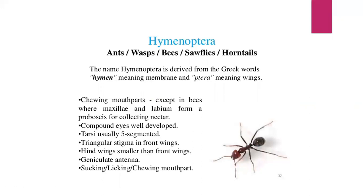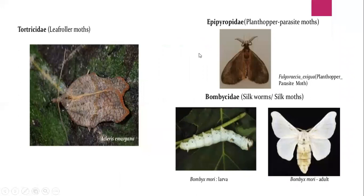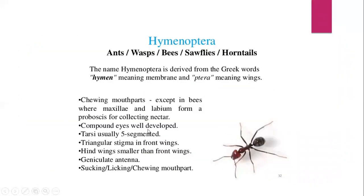Hymenoptera — Hymenopterans include ants, wasps, bees, and sawflies. The name Hymenoptera is derived from the Greek word 'hymen' meaning membrane and 'tera' meaning wings — membranous wings. These consist of chewing mouthparts in most insects. In bees, maxillae and labium form the proboscis for collecting nectar — lapping and siphoning type. Most Hymenopterans consist of chewing mouthparts. The eyes are compound and very well developed. The legs consist of tarsi, usually five-segmented. There is a triangular stigma in the front wings. Worker ants do not have wings, while queen and king ants do.